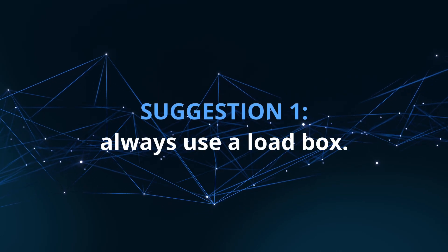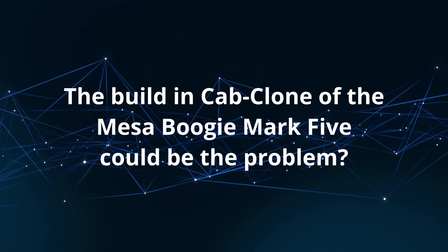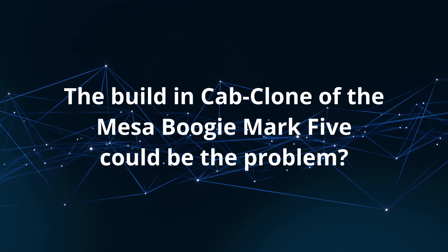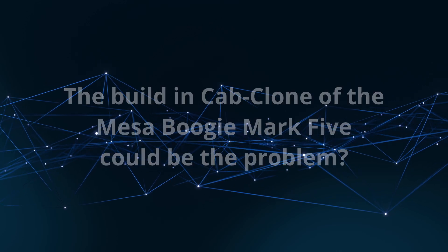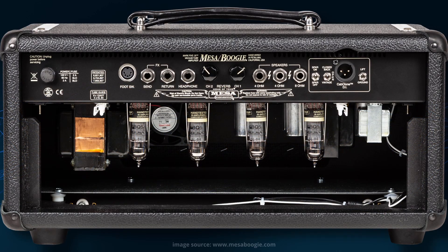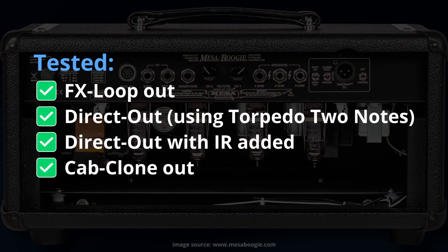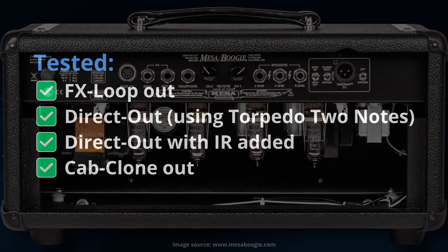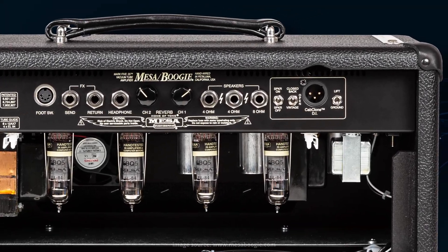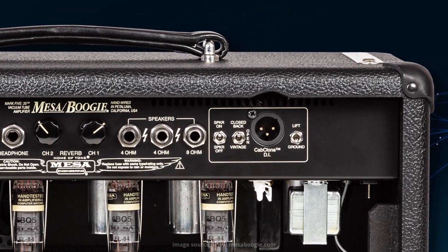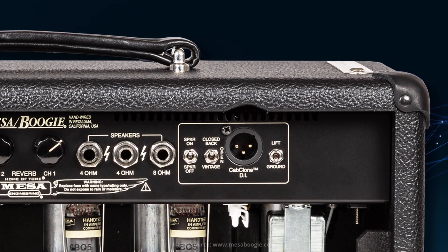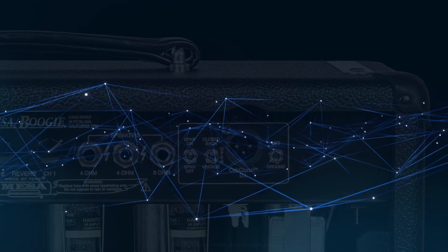Suggestion 1: Always use a load box. Using the built-in cab clone load box might have been the problem. Well, no, that is not the problem. In my tests, it seems that NAM does not really care where the audio signal comes from. You'll hear it in the later comparisons, which were again taken from the cab clone out of my Mesa Boogie Mark V.